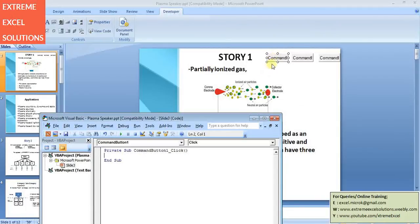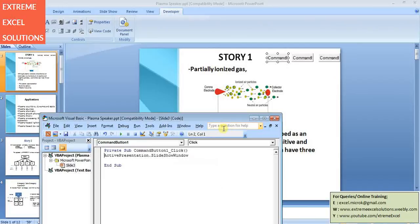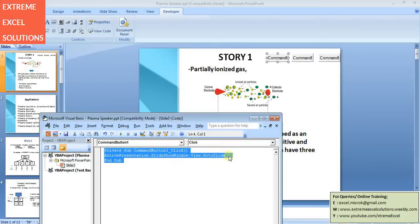On action you need to put ActivePresentation.SlideShowWindow.View.GoToSlide and then number. For first slide I'm putting one. Now I'm copying this text.